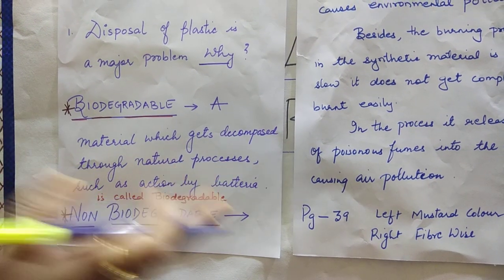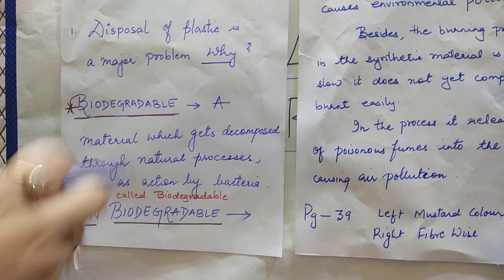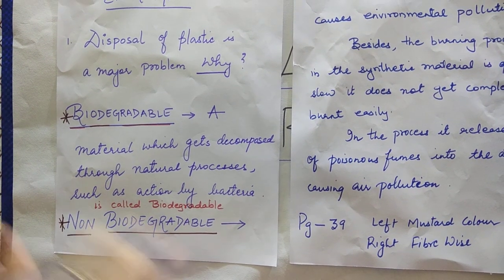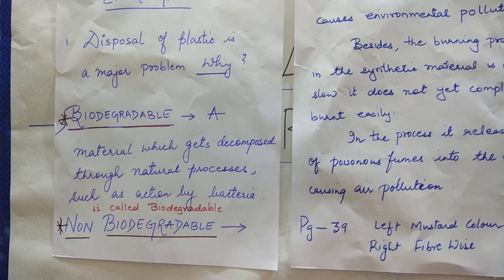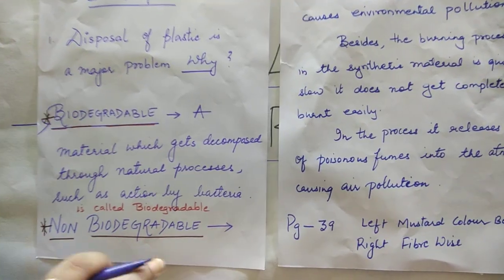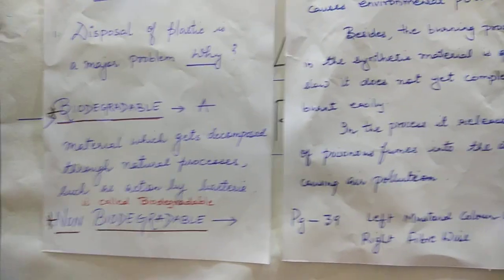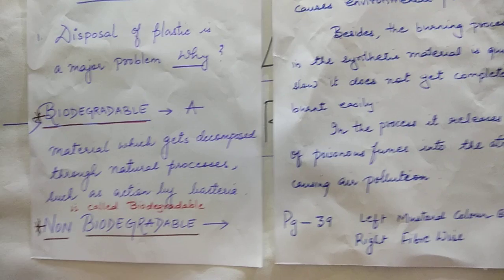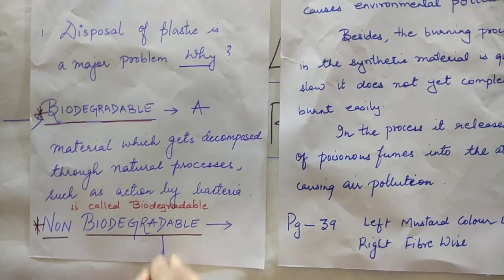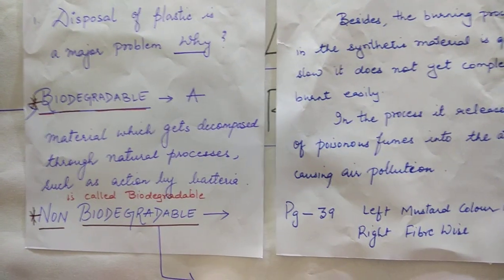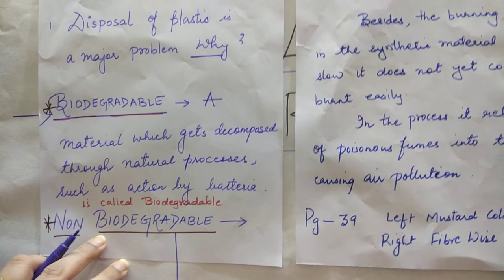There are two types of waste. Biodegradable materials get decomposed through natural processes easily — leftover food, vegetable peels, fruit peels — these come under the category of biodegradable waste. Bacteria act on them, break them down into pieces, and they mix back with the soil.